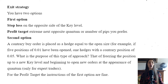Second option: A contrary buy order is placed as a hedge equal to the open sides. For example, if five positions of 0.01 have been opened, one hedges with a contrary position of 0.05. The purpose of this approach is to freeze the position up to a new Key Level and begin opening orders at the appearance of Quantum — only for the expert trader. For the profit target, the instructions of the first option apply.